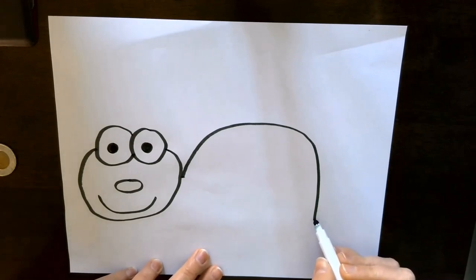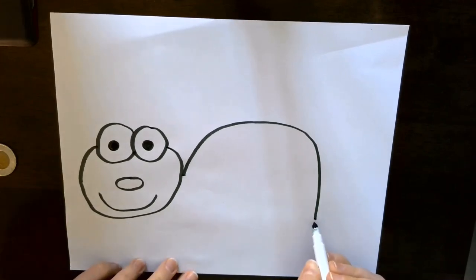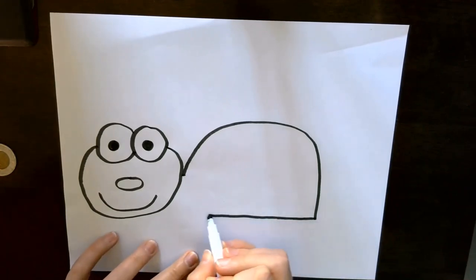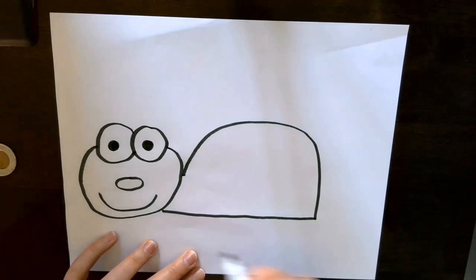Once you get down to about where the bottom of the face is then you'll do a nice straight line all the way across to join the shell to the rest of the body.